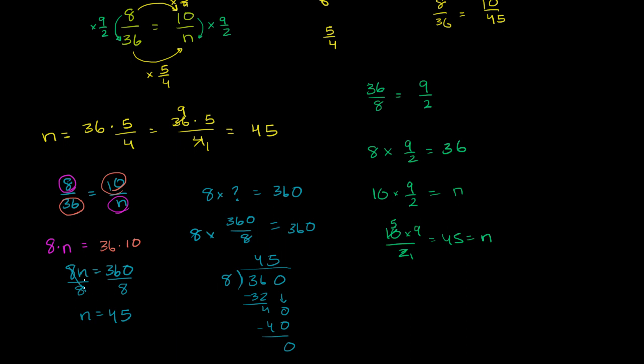The last thing I'll show involves a little bit of algebra. If any of the earlier ways work for you, that's fine — at this point in the playlist you're not expected to know the algebra. But I want to show you that cross multiplication isn't some magic; using algebra we get the exact same result. So let's rewrite our proportion: 8 over 36 is equal to 10 over n, and we want to solve for n.